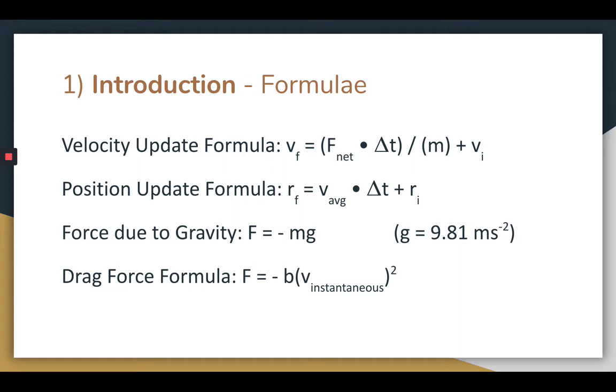The formulae relevant to this lab are shown below. The velocity update and position update formulas are applied iteratively in the models to predict the box's position and velocity as a function of time. The force due to gravity on an object is equal to the object's mass multiplied by the acceleration due to gravity. The drag force acting on an object is proportional to the square of the instantaneous velocity of the object. The b in this equation is the proportionality constant.